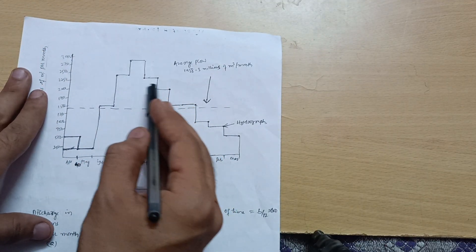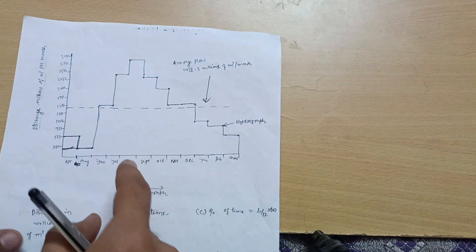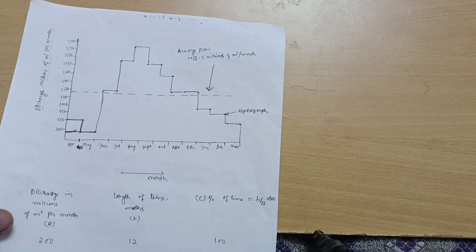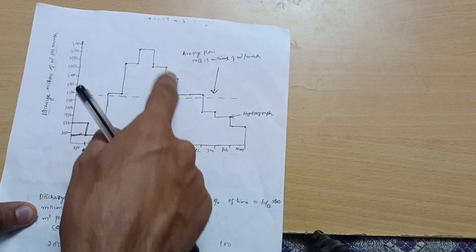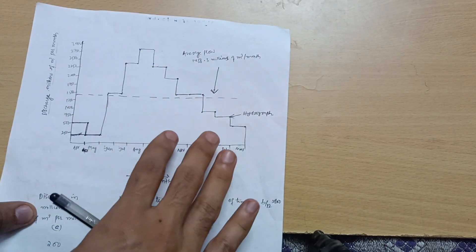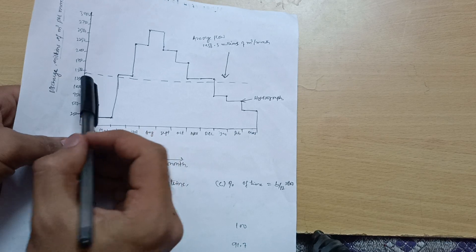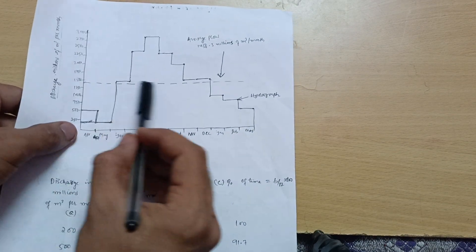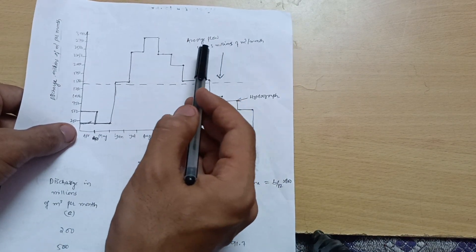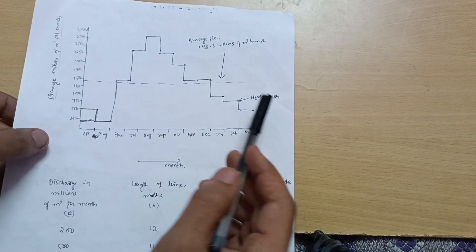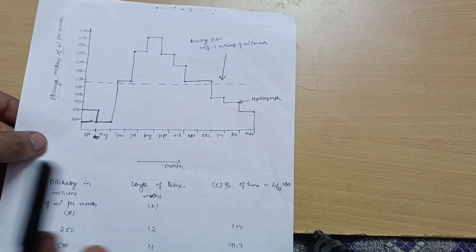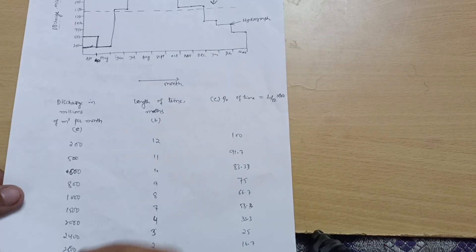Continue drawing the rest of the hydrograph in the same manner. Your average flow of 1458.3 million meter cube per month is shown as a dotted horizontal line on the graph. This completes the hydrograph.